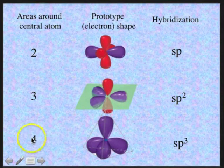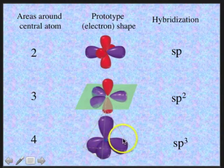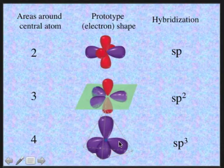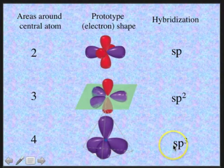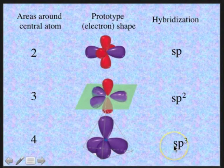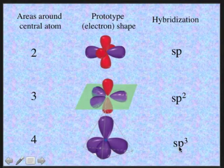If we have four areas around the central atom, then we have four balloons tied together in the shape of a tetrahedron — that's the most stable shape. The hybridization there is when an s orbital and three p orbitals combine to form four new energetically equivalent sp3 hybridized orbitals.